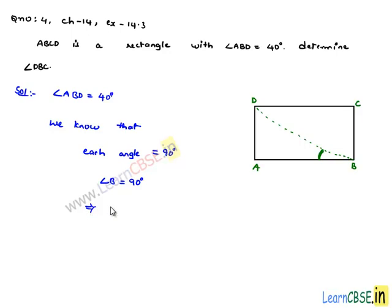This implies that angle B can be written as the sum of angle DBA and angle DBC, which is equal to 90 degrees.